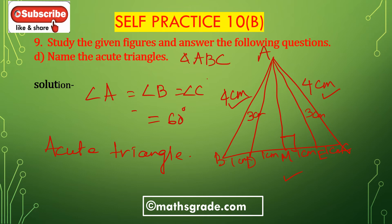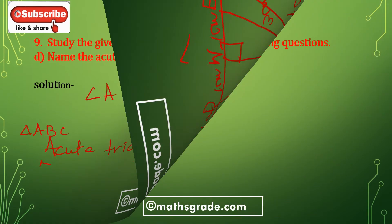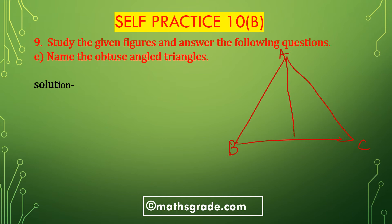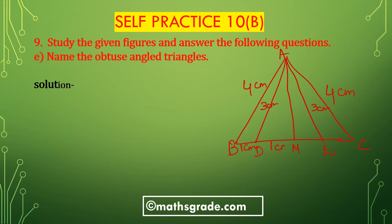Angle ABC is an acute triangle. All three angles are equal to 60 degrees. Now name the acute angle triangle. First draw the given triangle. The figure shows A, B, C with M, D and A, E. This is 3cm, this is 4cm, 4cm, 4cm, 4cm, this is 1cm, 1cm, 1cm, and this is 1cm, which is 90 degrees.